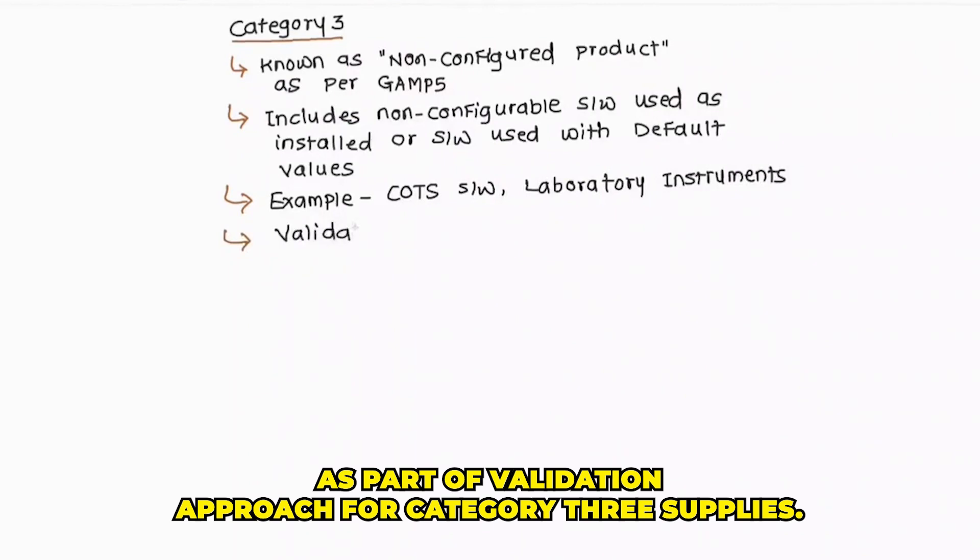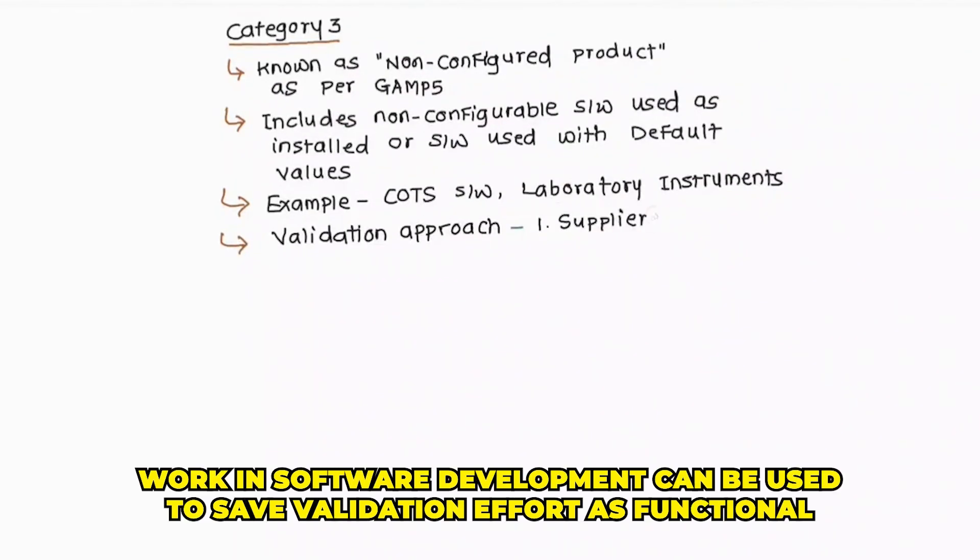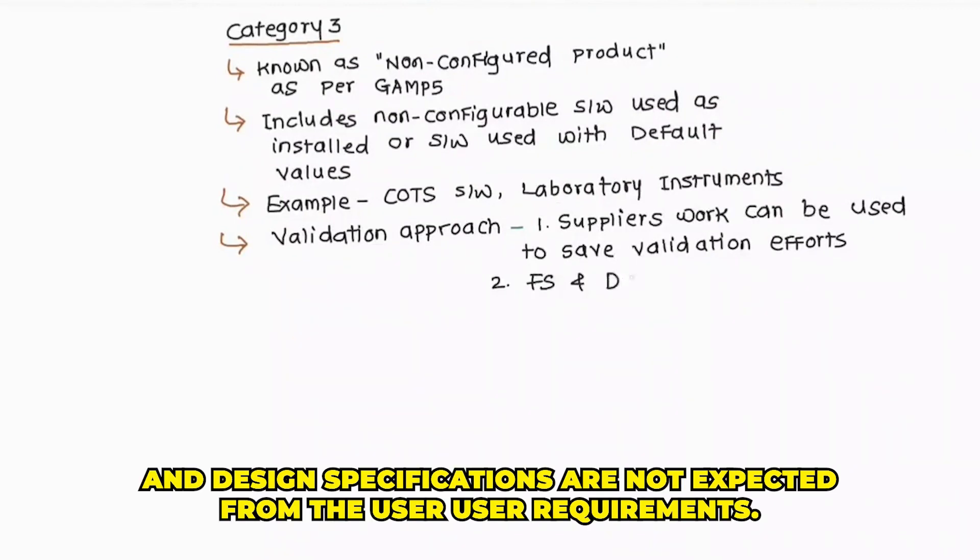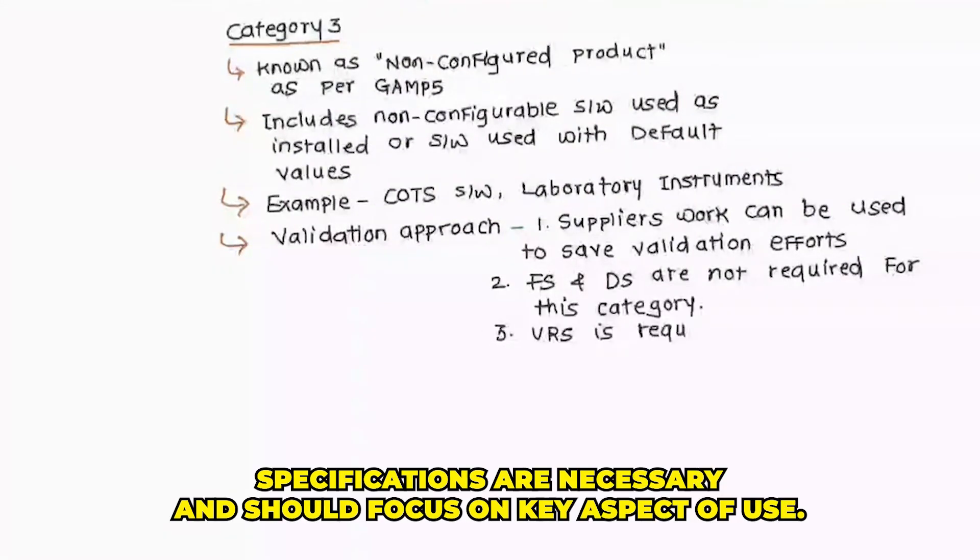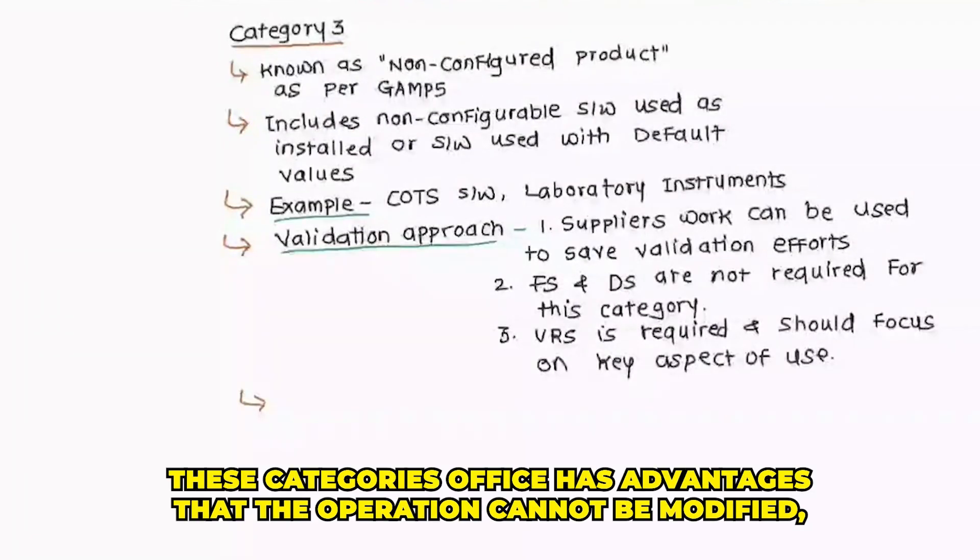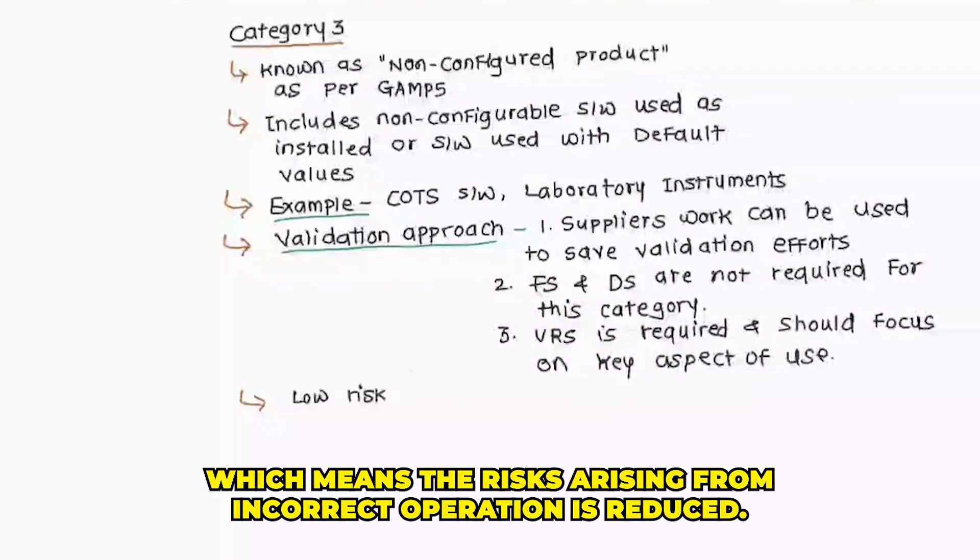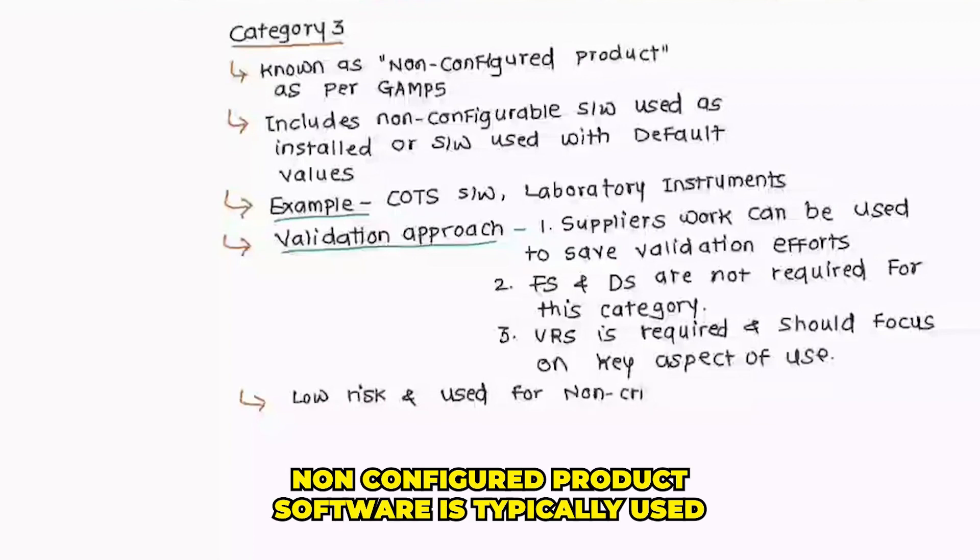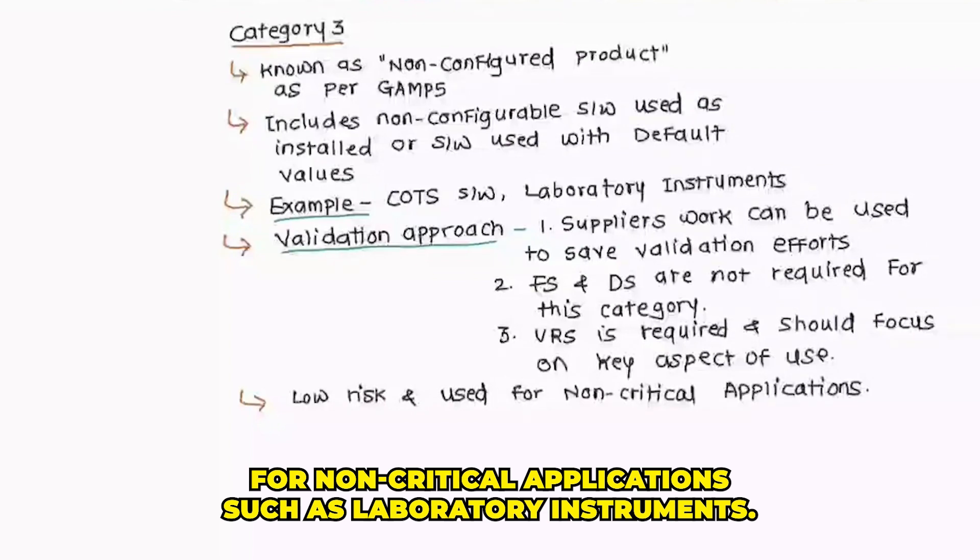As part of validation approach for category 3, suppliers work in software development can be used to save validation effort, as functional and design specifications are not expected from the user. User requirement specifications are necessary and should focus on key aspects of use. This category software has an advantage that the operation cannot be modified, which means the risk arising from incorrect operation is reduced. Non-configured product software is typically used for non-critical applications such as laboratory instruments.